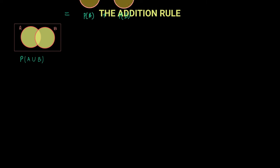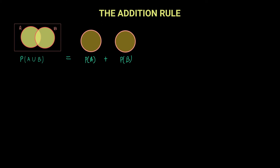So can't you say that the probability of A union B is technically the probability of A plus the probability of B?